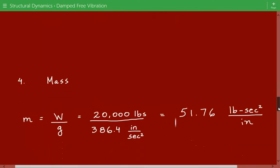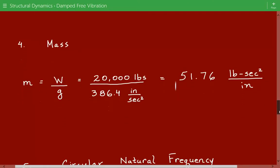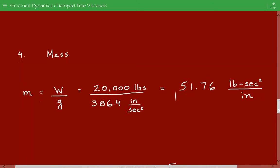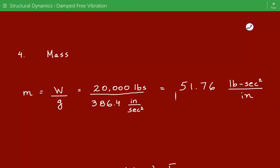After this, we need to calculate the mass. And the mass is equal to the weight divided by the gravitational acceleration. So the concentrated load is equal to 20 kips, so 20,000 pounds, divided by g, which is 386.4 inches per second squared. So our mass is equal to 51.76 pounds second squared per inch.